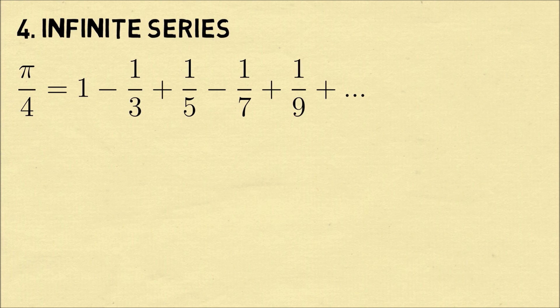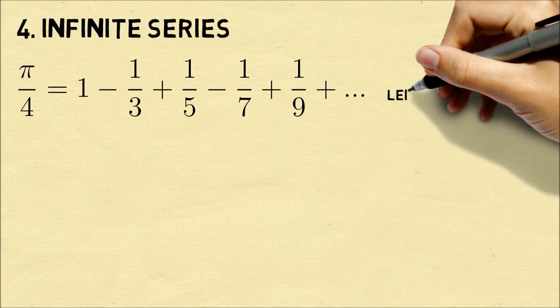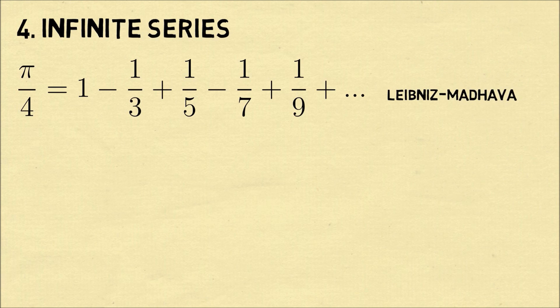Fact number 4, pi can be expressed in many infinite series. This is my favorite infinite series. Pi over 4 equals 1 minus 1 third plus 1 fifth minus 1 seventh plus 1 ninth and so on as the alternating sum of odd fractions. This is the Leibniz formula, which was also discovered by the Indian mathematician Madhava.